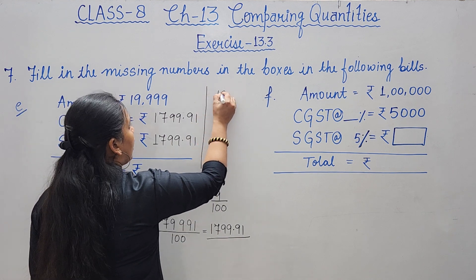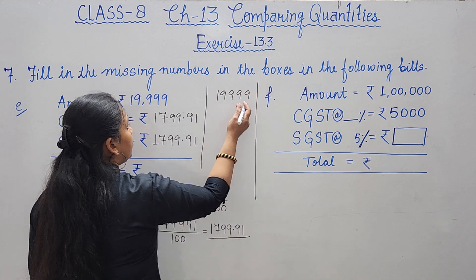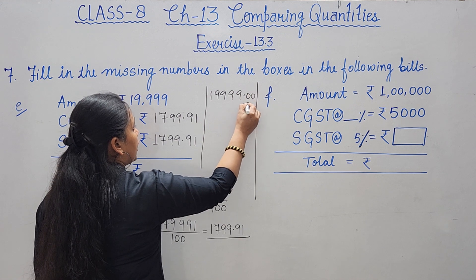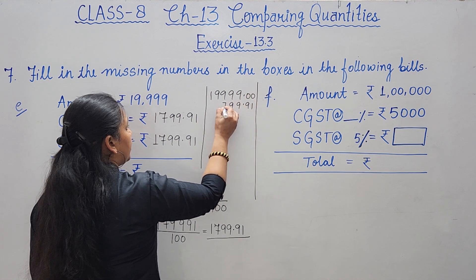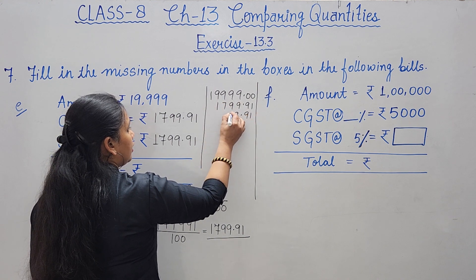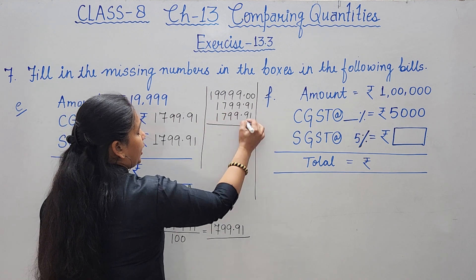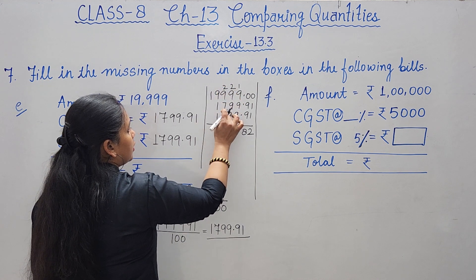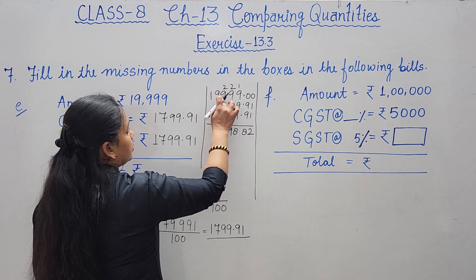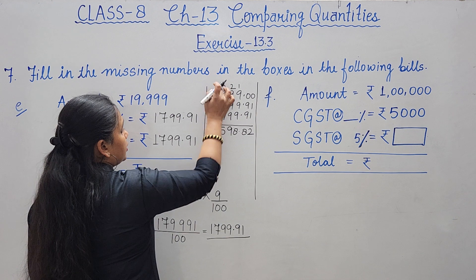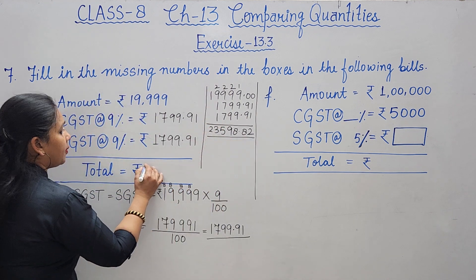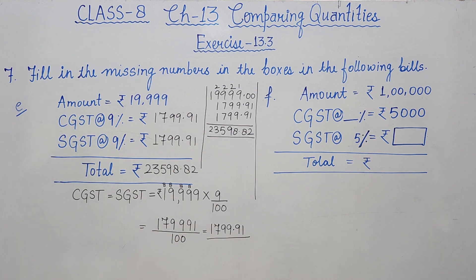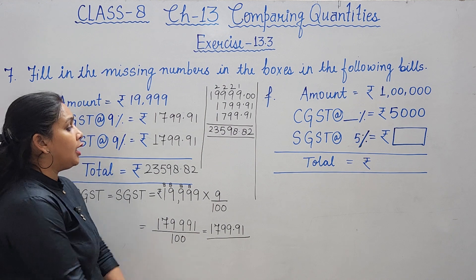Now add all three: 19,999.00 + 1799.91 + 1799.91. Adding the decimal parts and carrying over: total comes to rupees 23,598.82. So the total amount for part E is rupees 23,598.82.